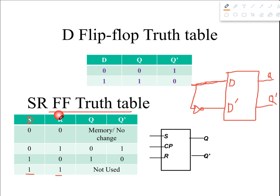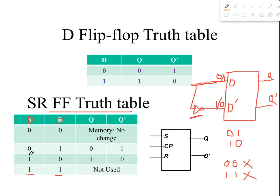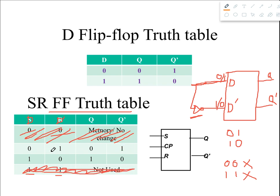Looking at the truth table for SR flip-flop, if we change the naming from S and R to D and D prime: if D is zero then D prime would be one, and if D is one then D prime would be zero. That means we can only get 0,1 or 1,0 as combinations — we cannot get 0,0 or 1,1 because one input is always the complement of the other. So we cancel out those two rows from the SR truth table.